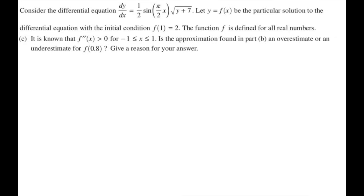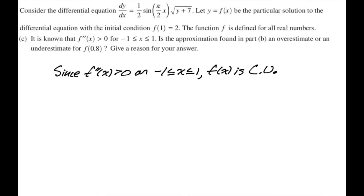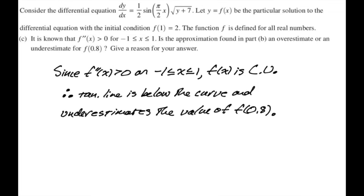For part C, f double prime is greater than 0 for x between negative 1 and 1 — they're giving us the concavity directly. Since f double prime is greater than 0 on that interval, f of x is concave up. Therefore, the tangent line is below the curve, meaning we are underestimating the value. So the approximation from part B is an underestimate.